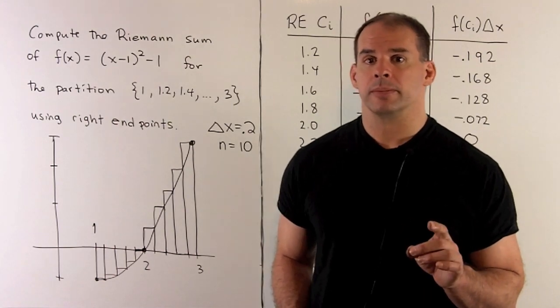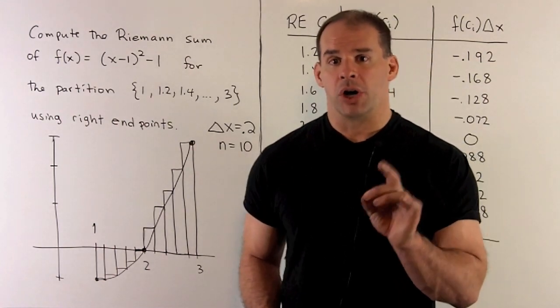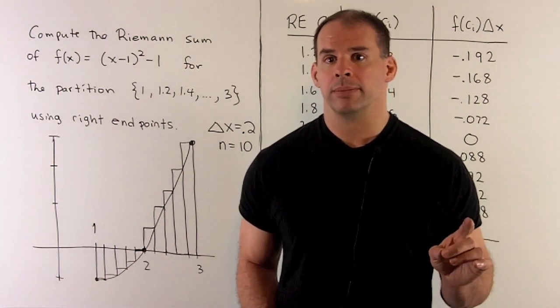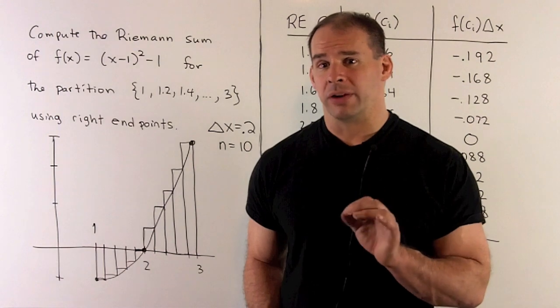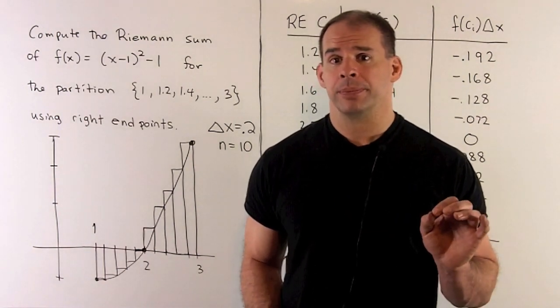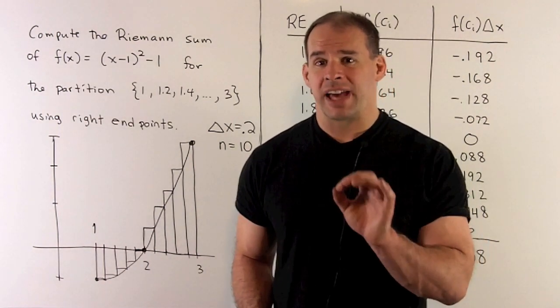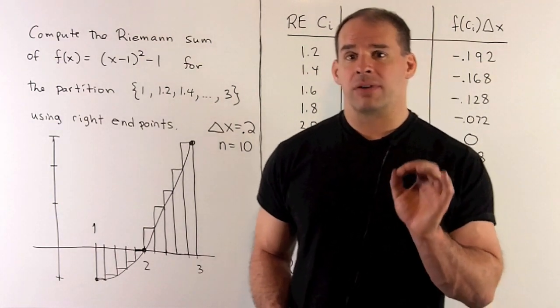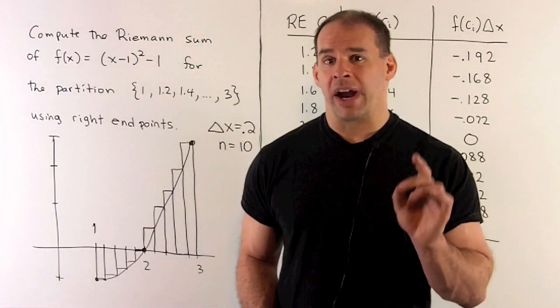Compute the following Riemann sum. First, our function is going to be f of x equal to x minus 1 squared minus 1. We're going to be over the interval from 1 to 3. We're going to use 10 rectangles with equal length base. And to get the height of our rectangles, we're going to use right endpoints.